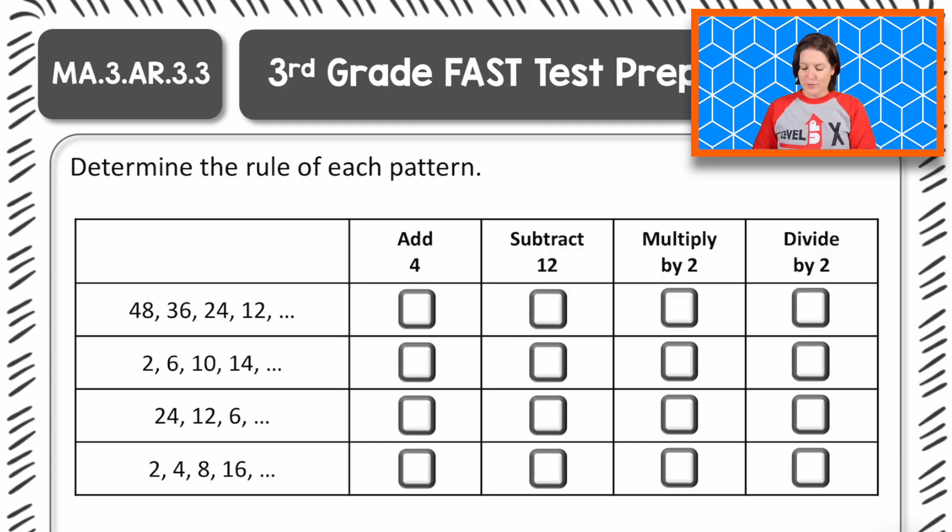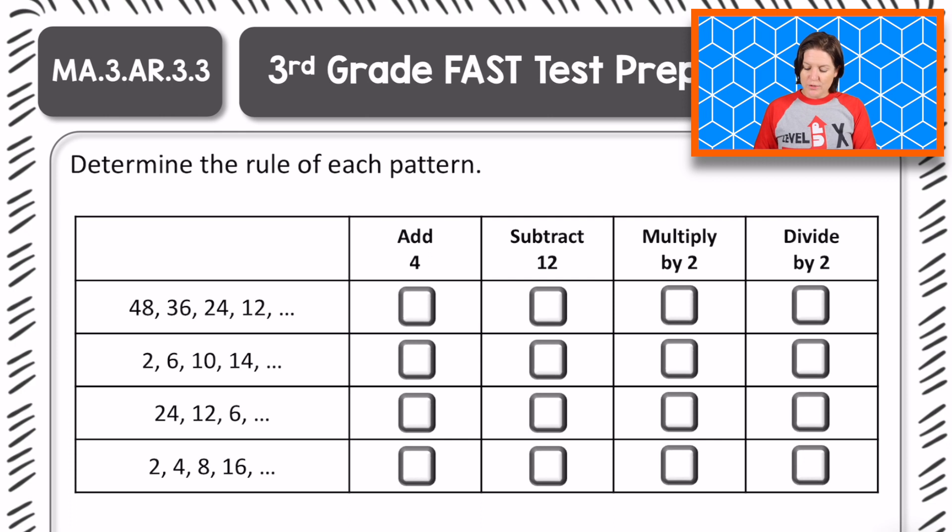All right, third grade, welcome back. This one says to determine the rule of each pattern. We have patterns in this matching item table. The rules are add 4, subtract 12, multiply by 2, or divide by 2. Let's start with the first one. We've got 48, 36, 24, and 12. Are those values increasing or decreasing? They're decreasing, right? That means we are not adding or multiplying. We're either subtracting or dividing.